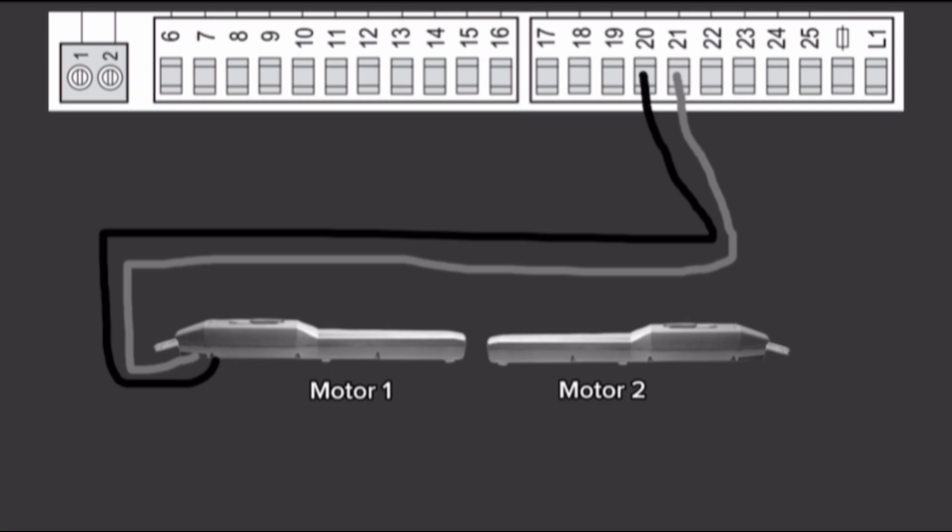The Motor 1 Second Phase Wire directly goes to Terminal 22. Terminal 22 is Motor 1 Close Brown Wire.